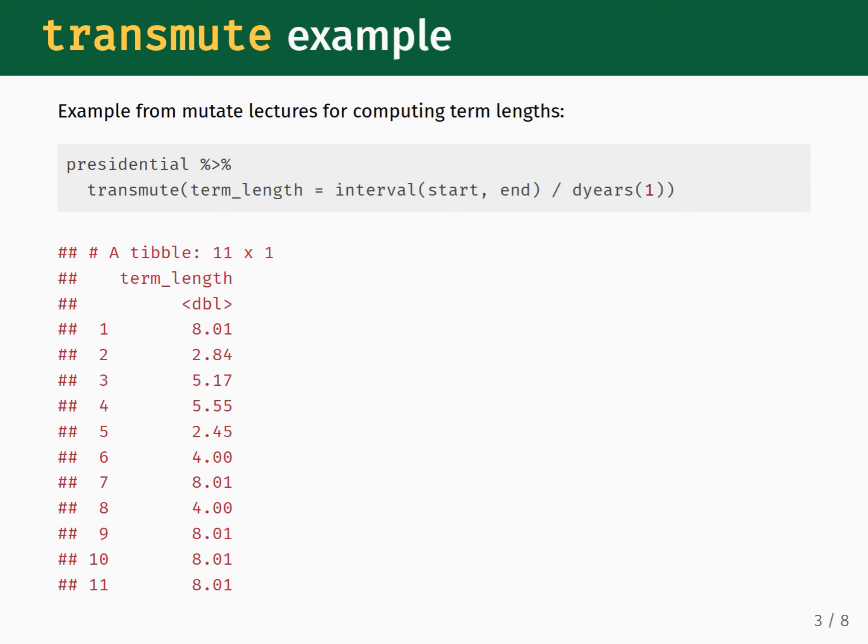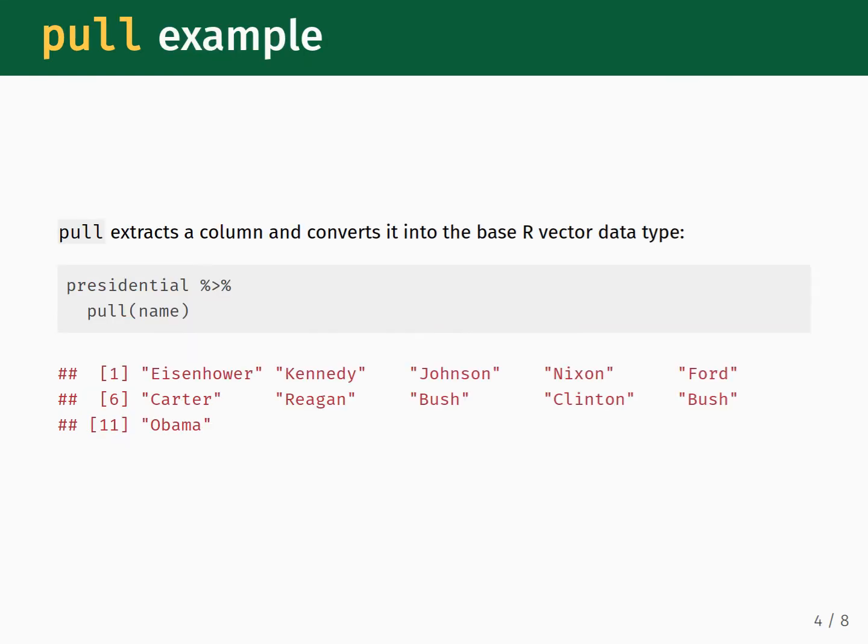Next, let's see how pull works. We pipe the presidential dataset into pull, and use the name column as the input. The result is a base R vector containing the president names. Note that after using pull, we no longer have a data frame.